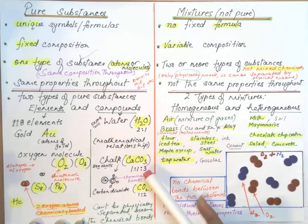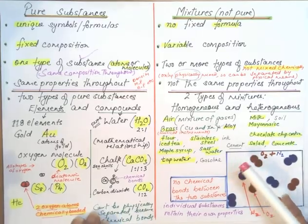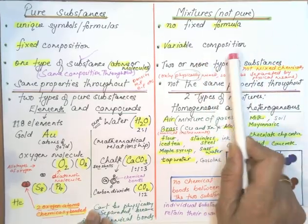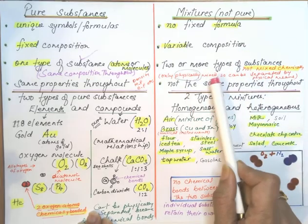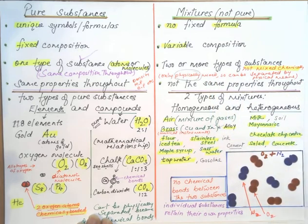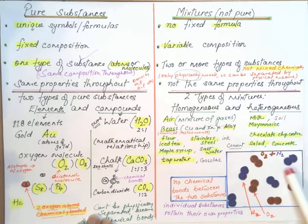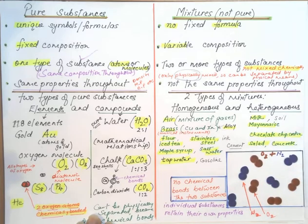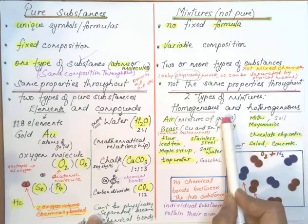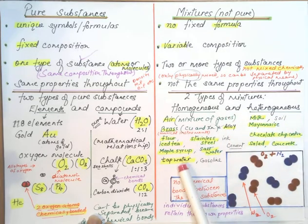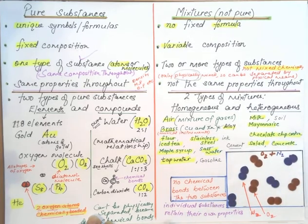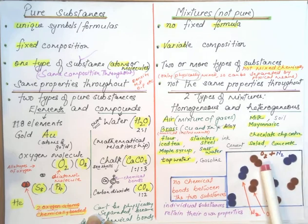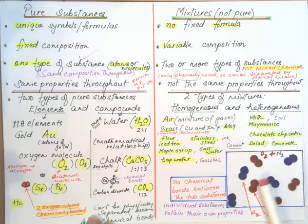These are more examples of elements and compounds. Mixtures don't have a fixed formula because they have a variable composition. They are made up of two or more types of substances which are only physically mixed. Here is the particle diagram — oxygen gas and nitrogen gas. These molecules are only physically mixed together and retain their own properties. There are no chemical bonds between these two substances. Two types of mixtures are homogeneous and heterogeneous. Individual substances retain their own properties, so oxygen and nitrogen molecules, even though mixed together, are not mixed chemically, so their individual properties are retained.